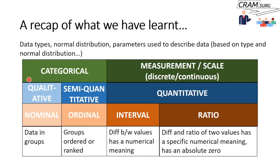This is the slightly complex table we discussed in the last talk. I want you to focus on the differences between categorical data and measurement or scale data, also called quantitative data. Categorical data is nominal or ordinal — qualitative — where you put values into categories, such as gender (male or female) or city in the UK. Measurement or scale data is something you can count — that's quantitative.